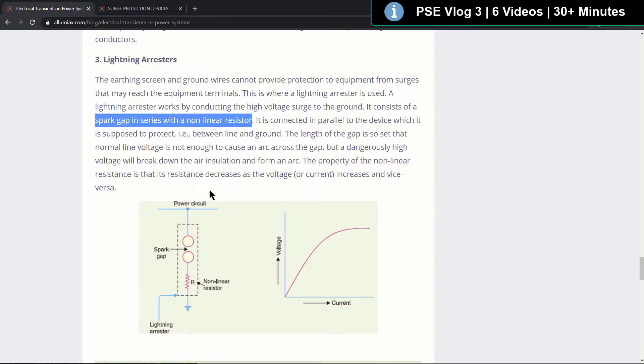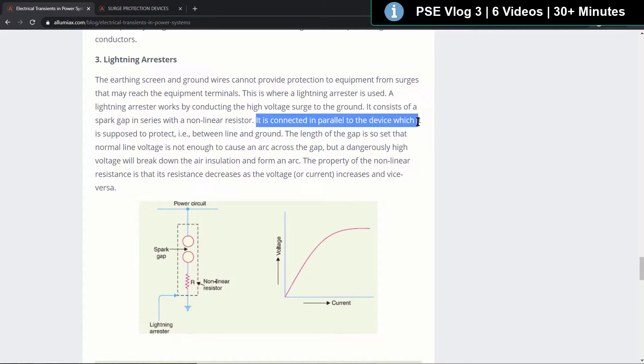So here's a spark gap, here's a non-linear resistor, it's connected in parallel to the device which is supposed to protect between the line and the ground.